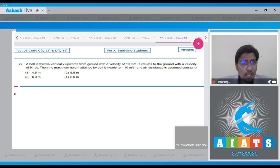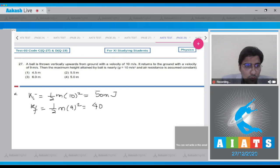Dear student, the initial kinetic energy, that is ki, can be written as half into m into initial speed square. So this will be equal to 50 into m joules. The final kinetic energy will be half m into 9 square, that will be equal to 40.5 m joules. The loss of kinetic energy, that is delta k, will be equal to 9.5 m joules.